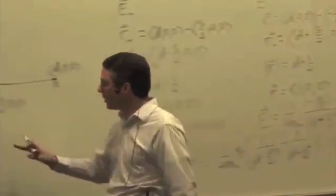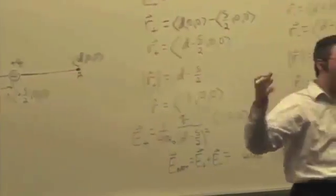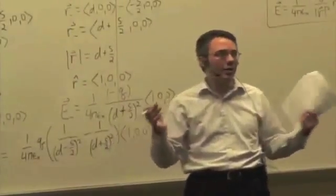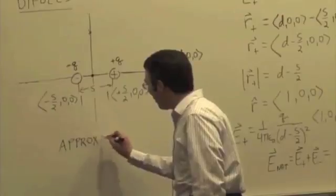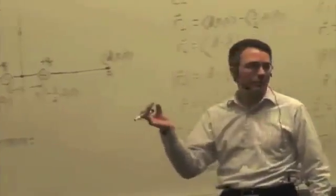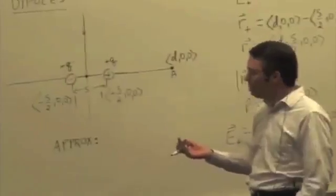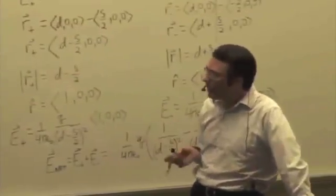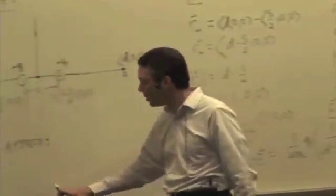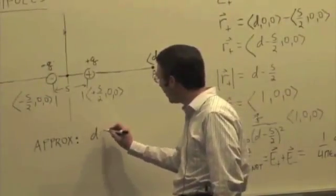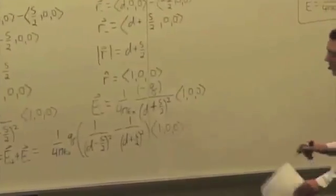The approximation we want to make is this: typically when dealing with dipoles, the observation location is much farther away than the separation of the two charges. For dipoles in nature — like permanent dipoles of molecules such as water or hydrogen chloride — the separation of charge is on the atomic scale, while even at the nanoscale, the observation distance is much larger. So we deal with situations where D is much greater than S.